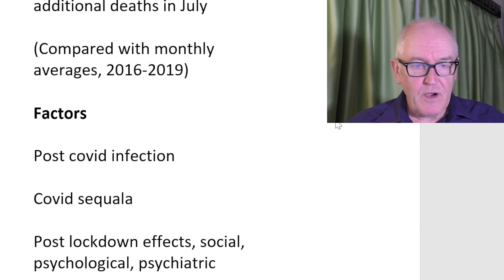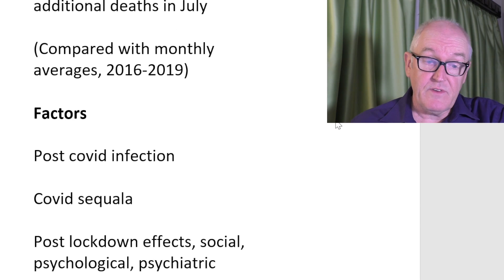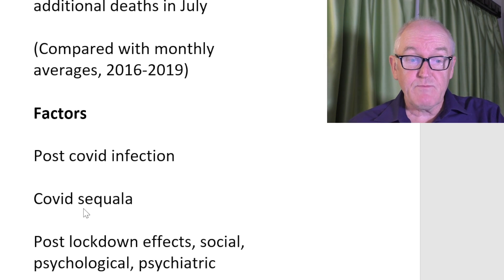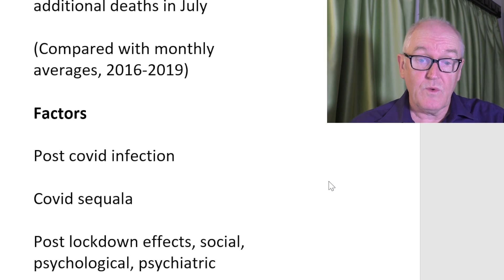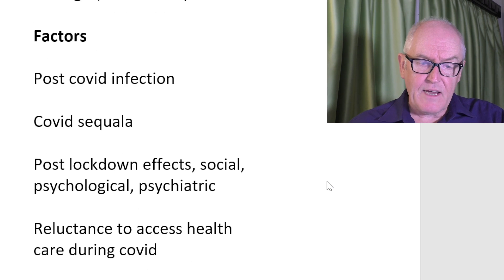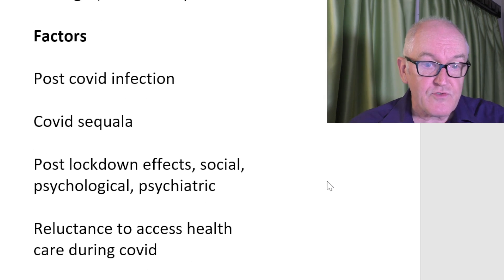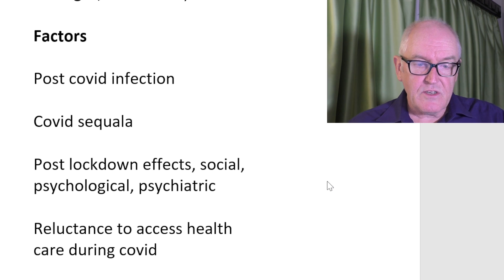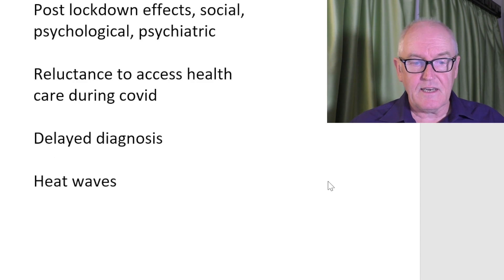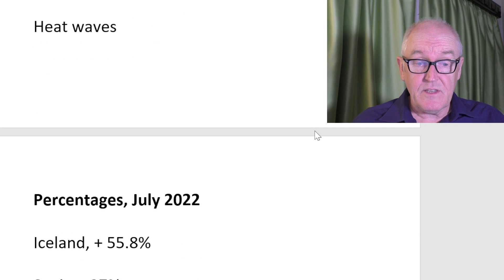So what are the factors? Post-COVID infection complications — the sequelae — particularly thromboembolic sequelae. We know these complications exist. Post-lockdown effects: social, psychological, and psychiatric effects. Reluctance to access health services during the pandemic and delayed diagnosis. And what we can't rule out in Europe, of course, is significant heat waves — we know that heat waves do increase overall deaths. So that is a factor as well in the European data and perhaps even in the UK data.